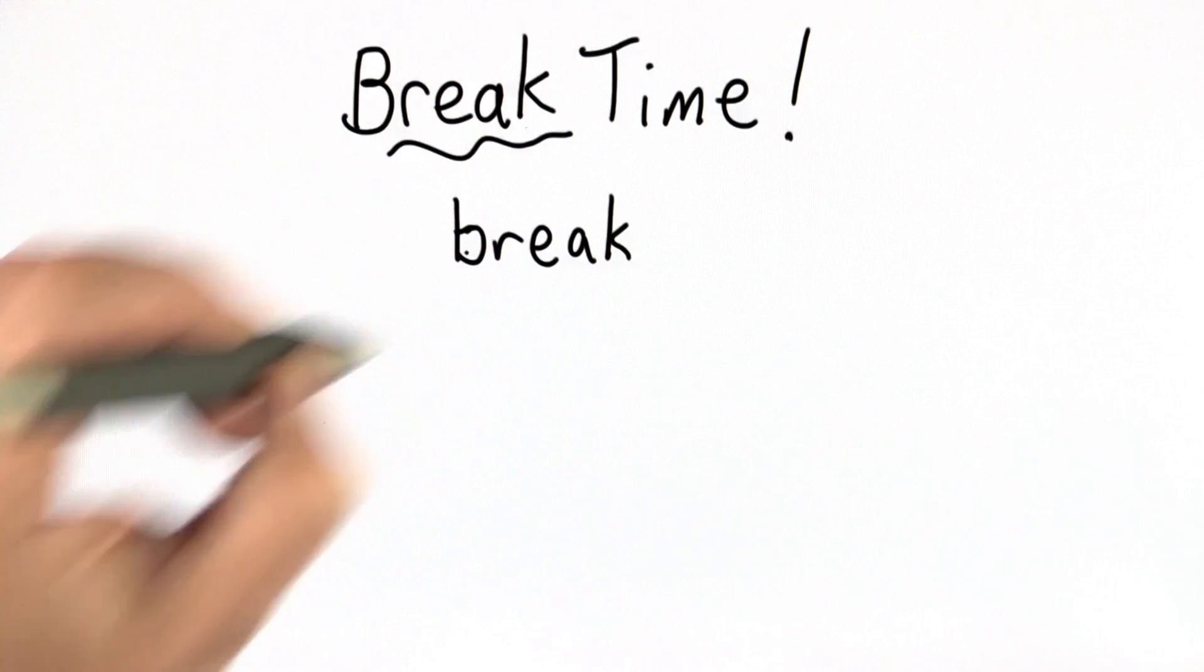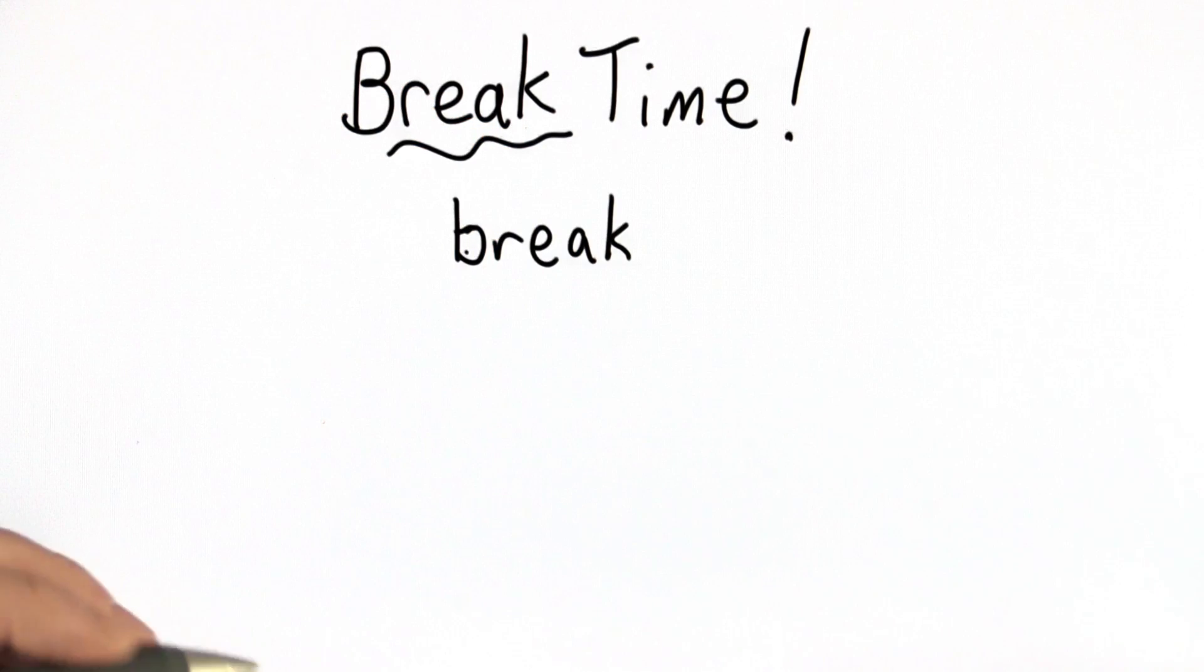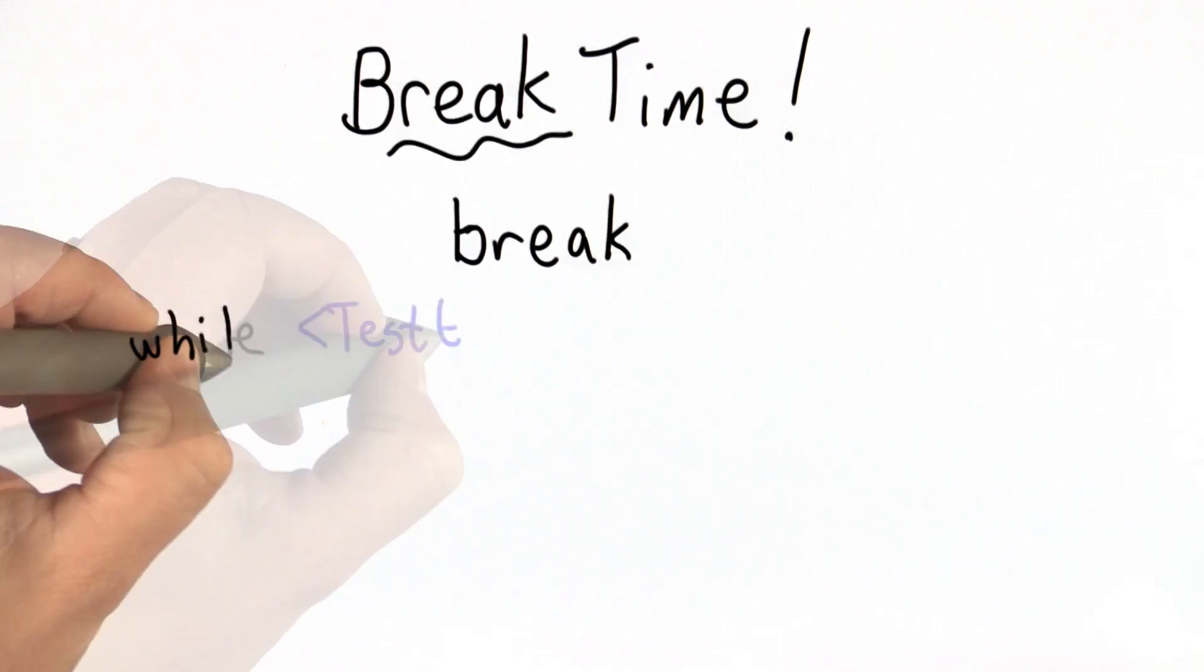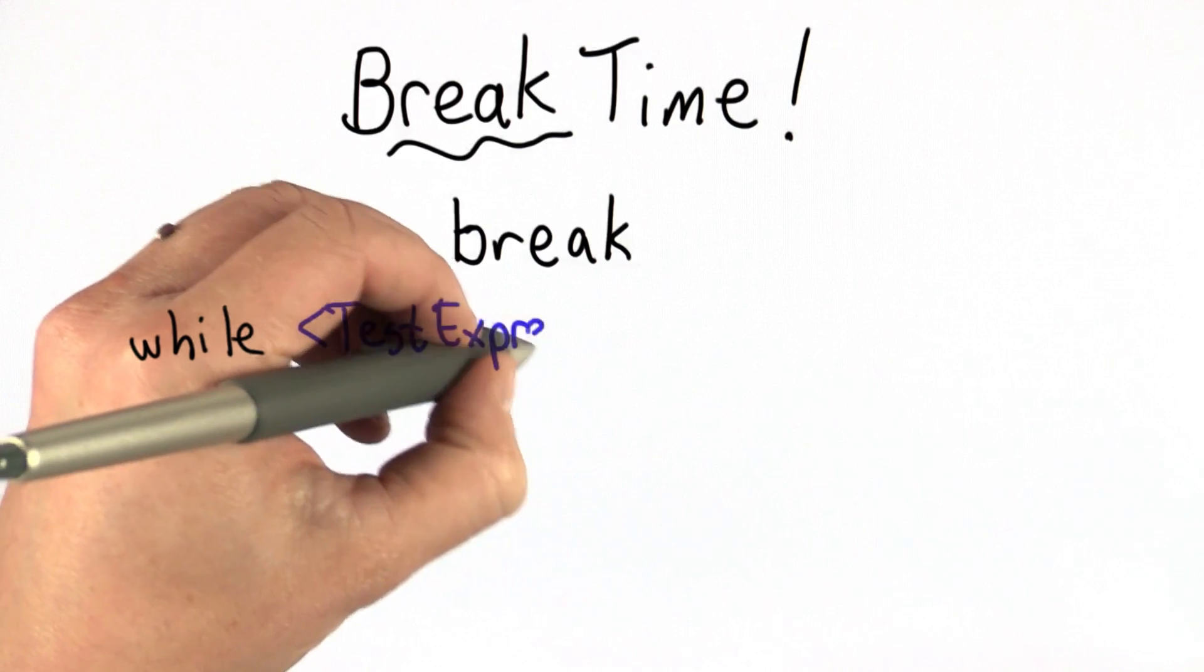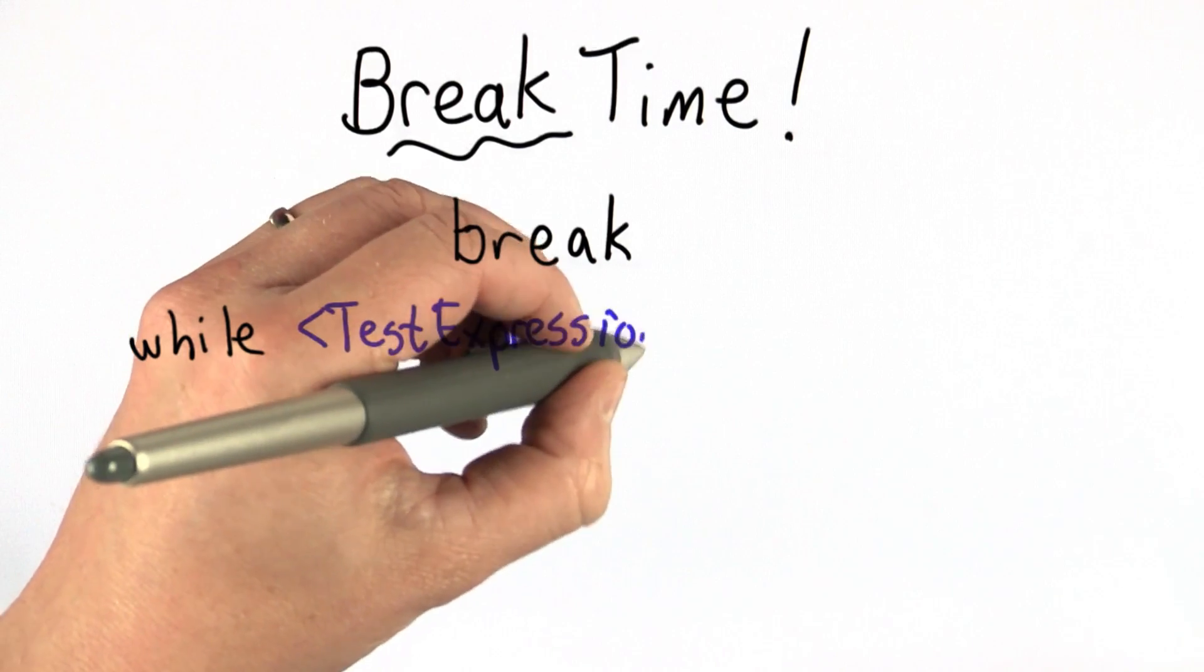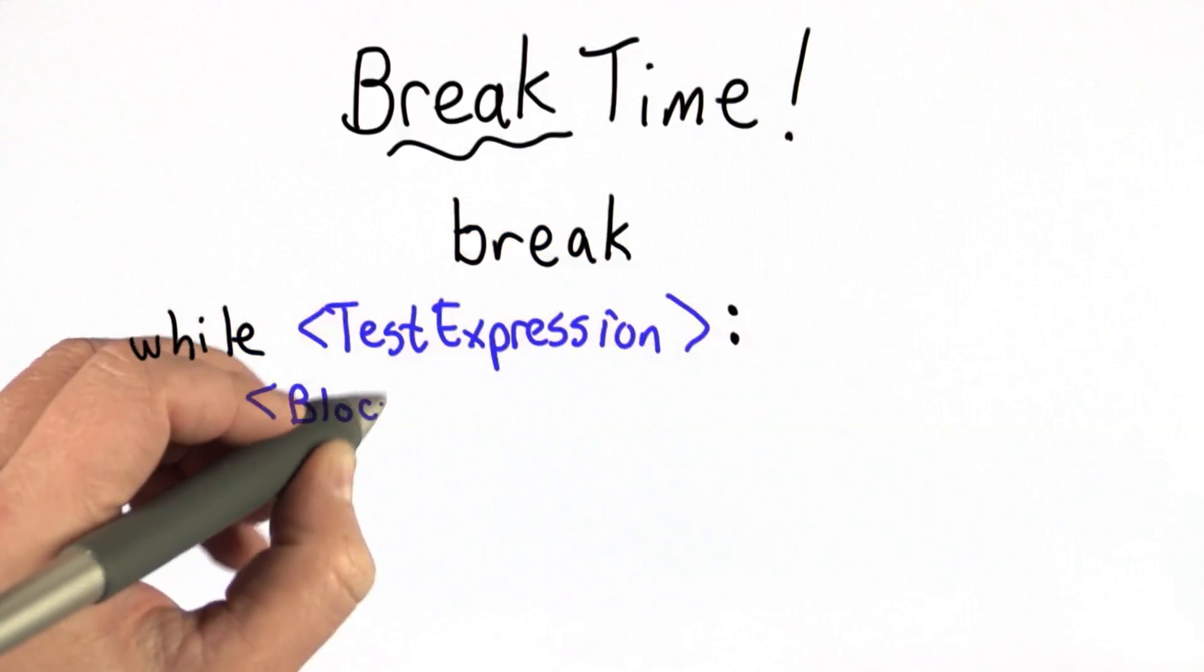Break gives us a way to stop the loop even while the test condition is true. Here's the typical structure of a loop with a break. We have the while as we did before, the test expression, a colon.